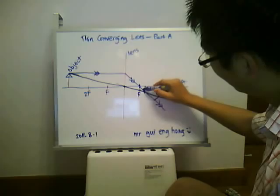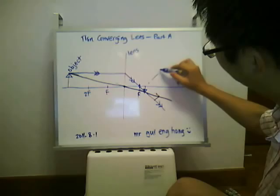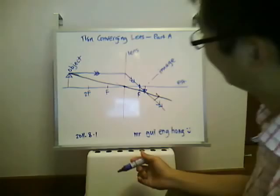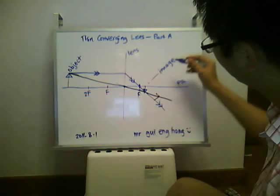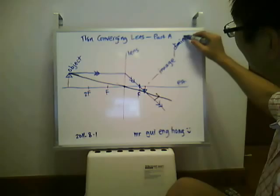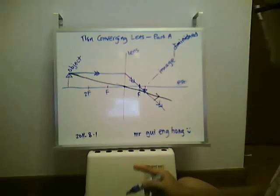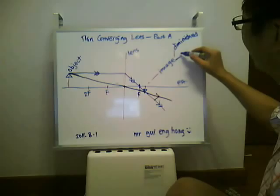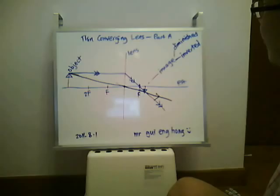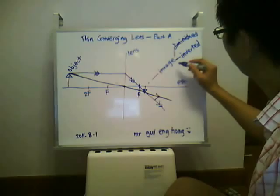The point where the 2 rays intersect — this is what we call the image. As we can see, if the object is very far away, more than twice the focal length, the image is smaller. We call this diminished — smaller than the object. This image is also upside down and left-right inverted, so we call it fully inverted. This image can be formed on a screen, and we call this a real image.